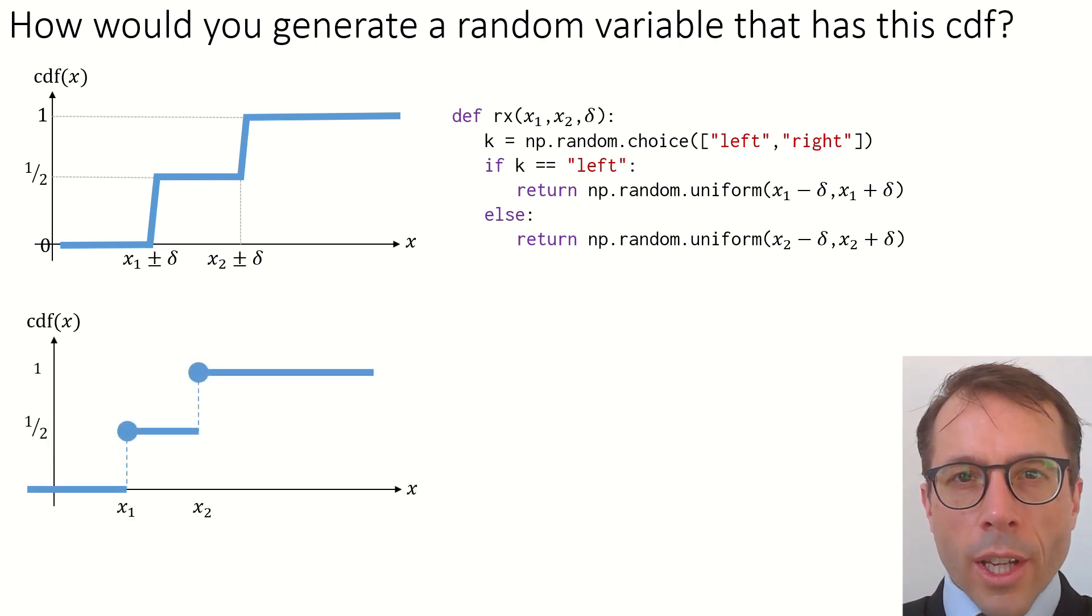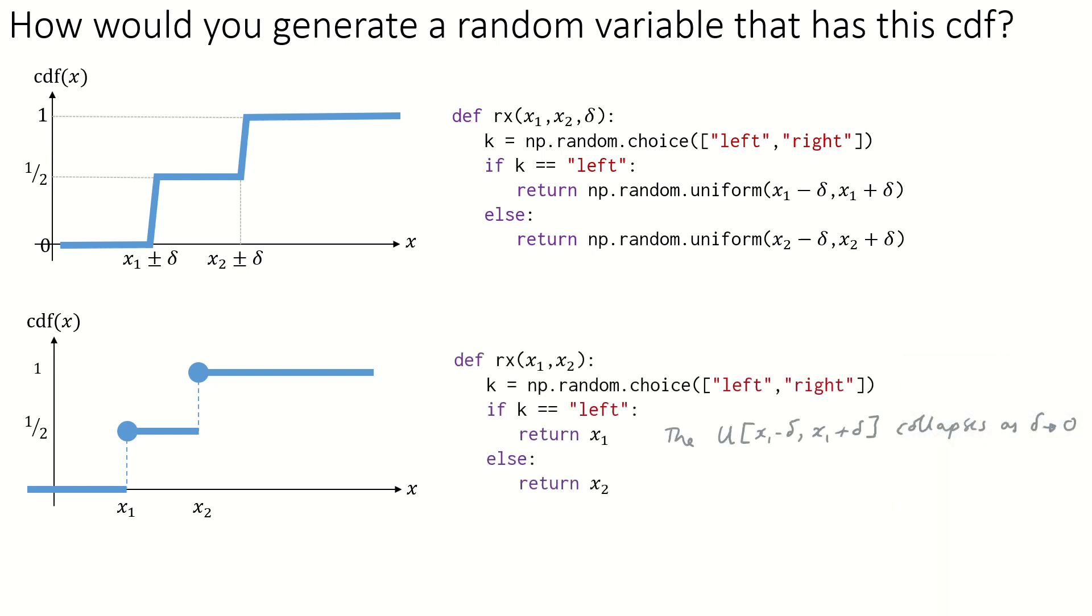Now, let's take it to the extreme. Let's let delta go to zero, giving us a step function. If we take just the same code as before, and ask what happens when delta is set to zero, it's easy. Either return x1 or return x2.